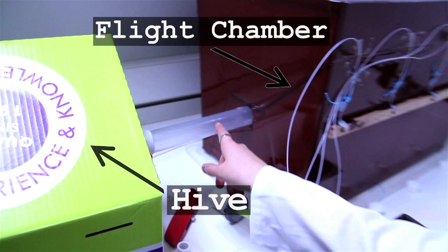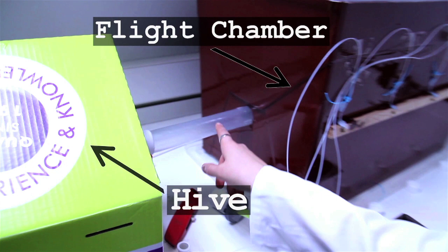This is the connection here for her to go into the flight chamber. There's been a couple of escapes. When I've got my first ever colony, which is that one there, and we were testing out my setup. And my connection between the hive and the flight chamber wasn't very good. And as a result, one managed to worm its way out.